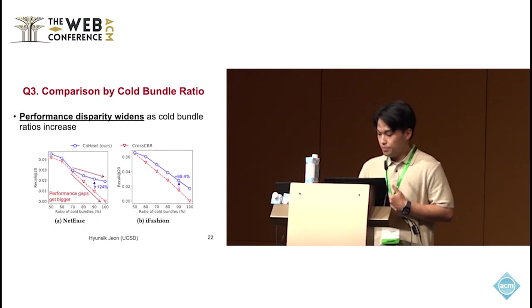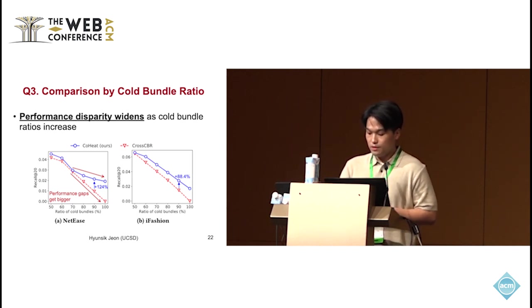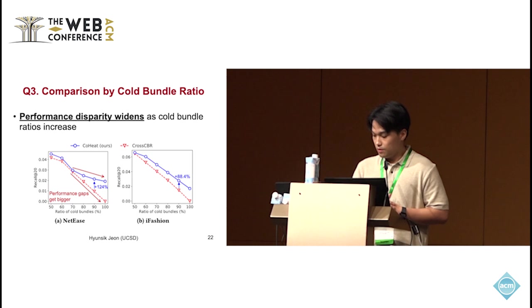We also compare the performance between COHIT and Cross-CBR under varying cold-bundle ratios in test datasets. As shown in the figure, the performance disparity between COHIT and Cross-CBR widens as the cold-bundle ratio increases. This highlights the effectiveness of COHIT in colder conditions.